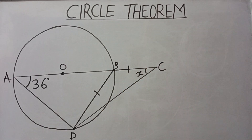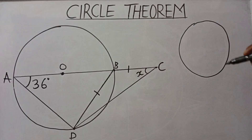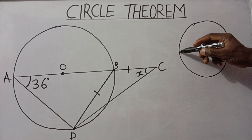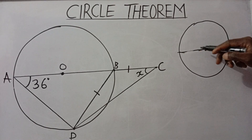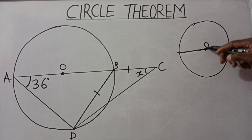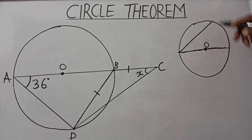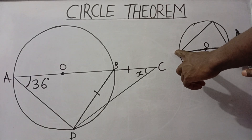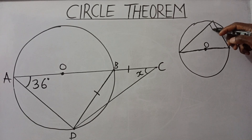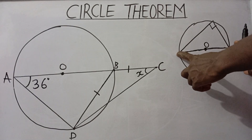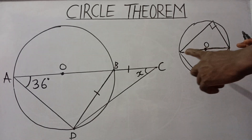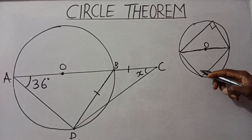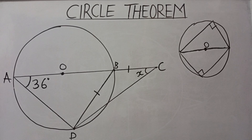The first thing we do is recall some theorems. There is a theorem we call the theorem of a diameter. The angle subtended from a diameter of a circle — when you have a circle with a center, the line that divides the circle into two equal parts is called the diameter. The angle subtended from both ends of the diameter to the circumference is always equal to 90 degrees.